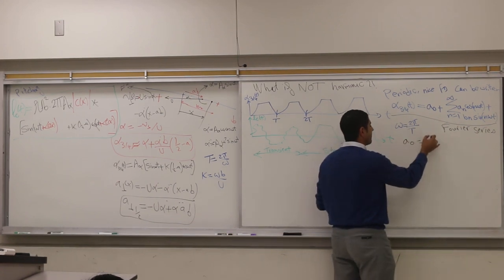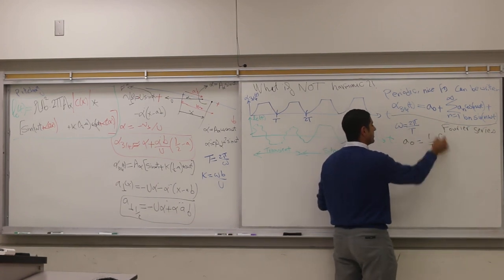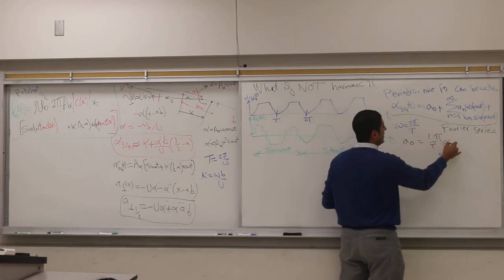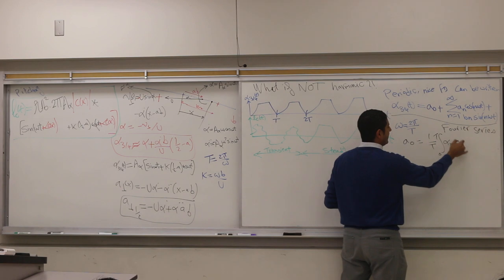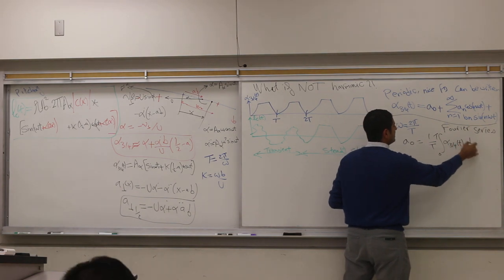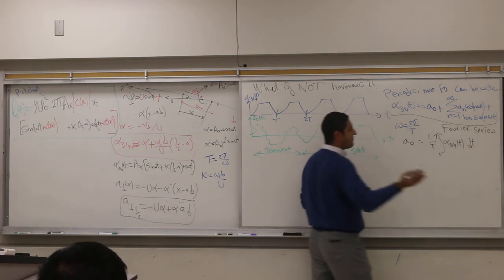It's very easy. What we said is the average, so it's 1 over T, integral from 0 to T, of your signal or your input, dt — that's the average.